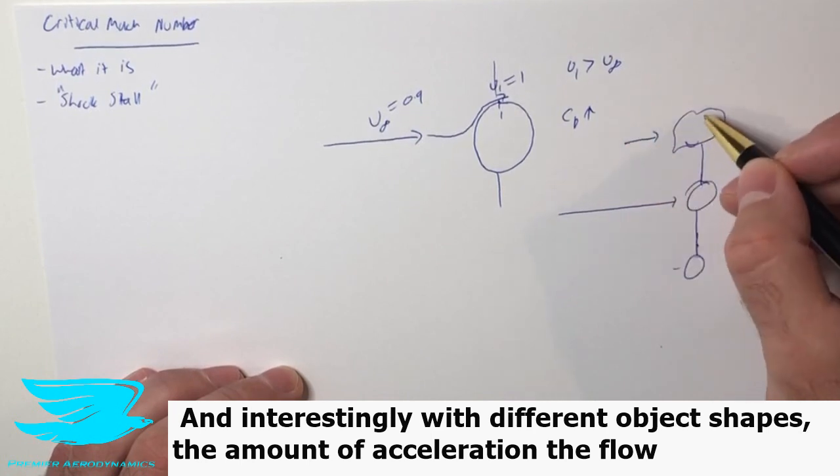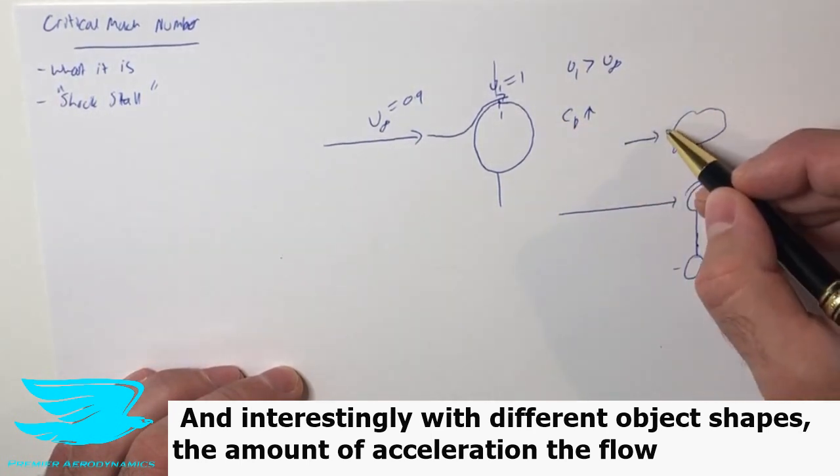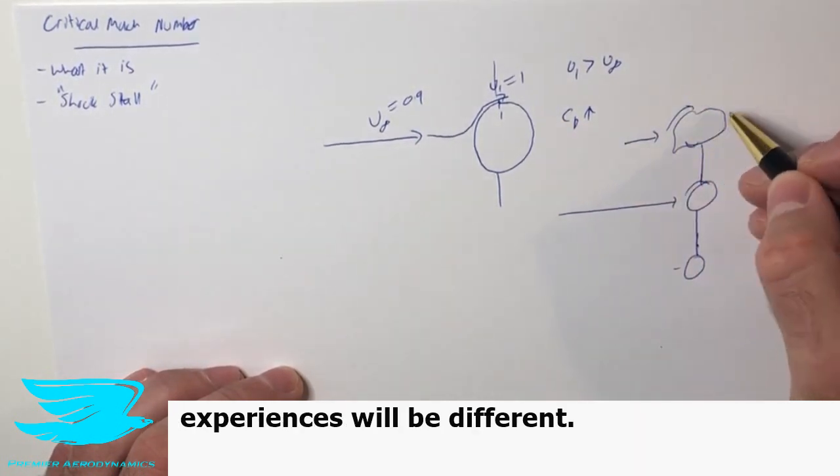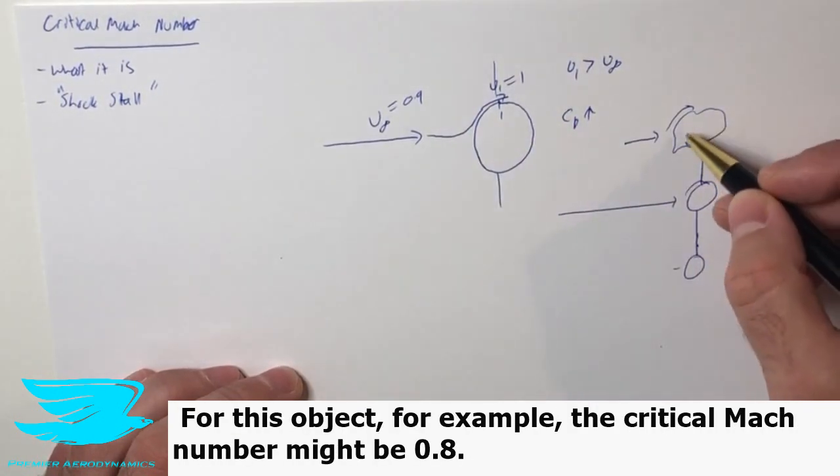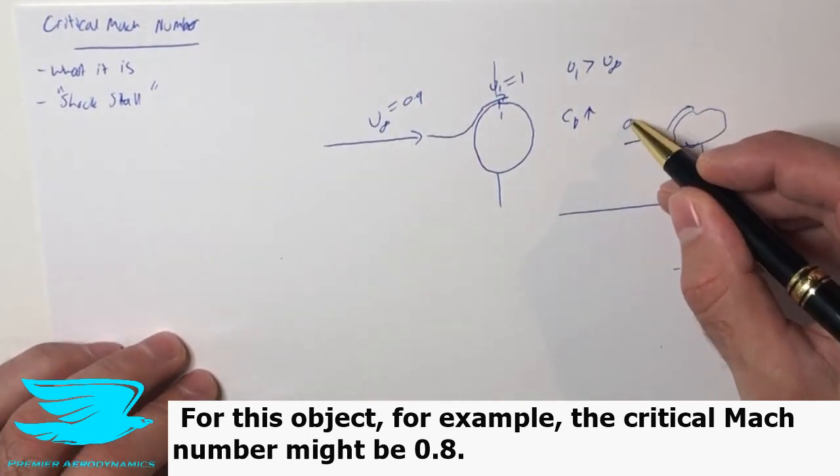And interestingly, with different object shapes, the amount of acceleration that the flow experiences will be different. So the critical Mach number may not be 0.9. For this object, for example, the critical Mach number might be 0.8.